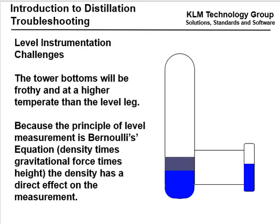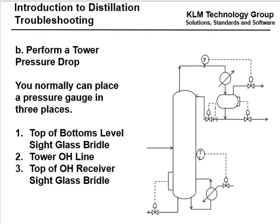Level instrument challenges: the tower bottoms level will be frothy at a higher temperature than the level transmitter. Because of the principle of level measurement — density times gravitational force times height — the density has a direct effect on the measurement. In hot service, the level in the tower is typically always higher than the level in the sight glass. So verify the levels.